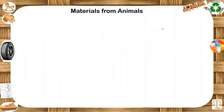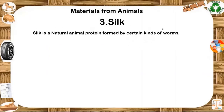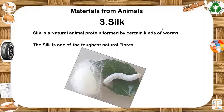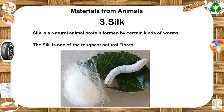Silk is a natural animal protein fiber formed by certain kinds of worms. These worms are grown in captivity and the cocoons they spin are used to make silk threads, which are then woven into beautiful and luxurious silk cloth. The silk is one of the toughest natural fibers. The greatest quality of silk is that it is a breathable fabric. Silk is also a good heat absorbent which helps keep you warm in cold nights, while also keeping the body cool in summer.